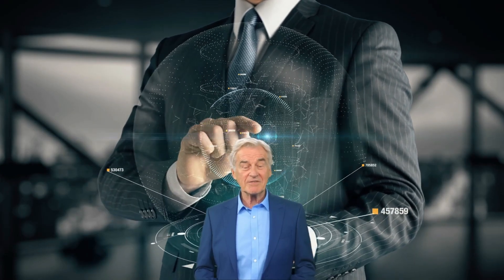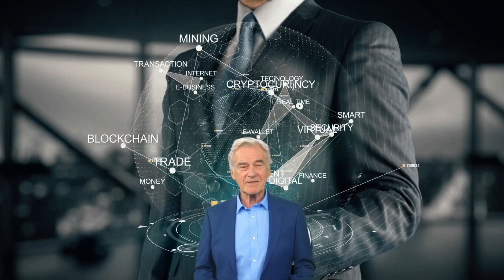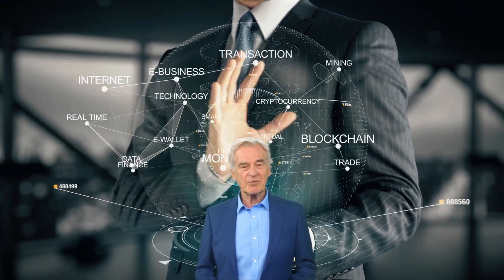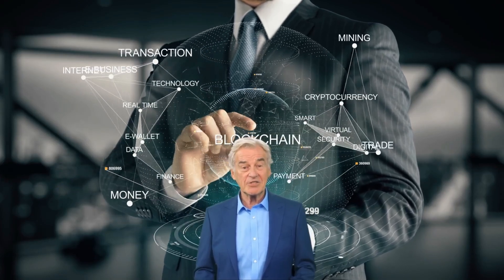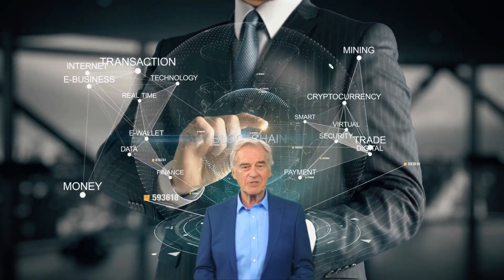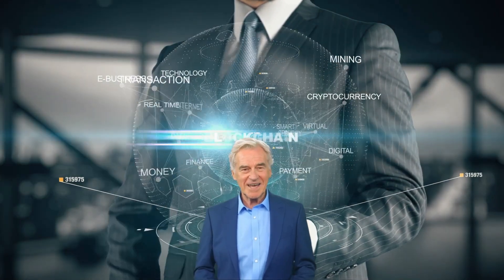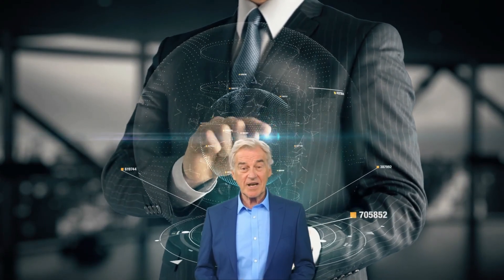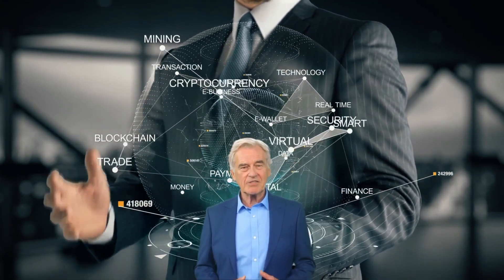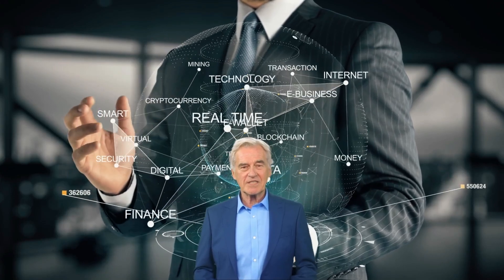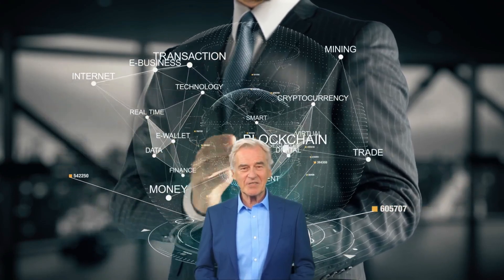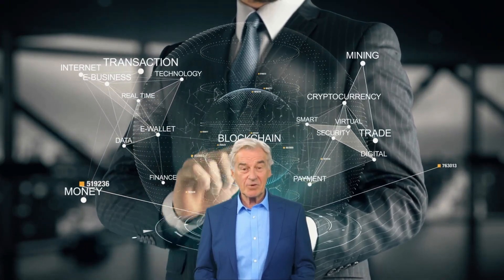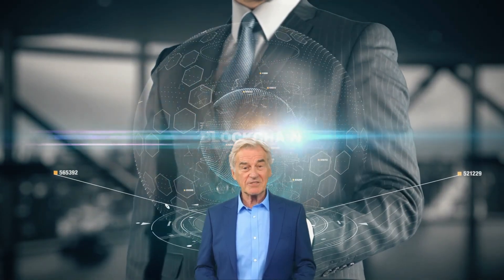An open source layer 1 blockchain for decentralized peer-to-peer payments is a digital system that allows people to send and receive money directly to each other without the need for banks or middlemen. It's like a digital version of cash that can be used to buy things or send money to friends, family, or anyone around the world. This openness ensures that the platform is trustworthy and not controlled by any single entity, making it a safe, fast, and community-driven way to handle payments without the hassles of traditional banking systems.